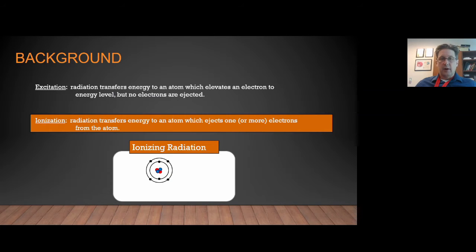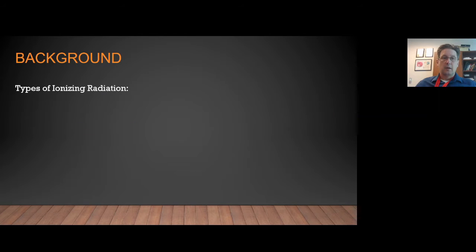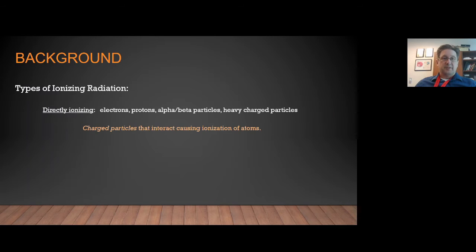To illustrate that, we have our atom. The radiation interacts with that atom and ejects an electron, creating a free electron that moves about the tissue as well as leaving behind a positive ion. The types of ionizing radiation we are concerned with are categorized as directly ionizing — charged particles: electrons, protons, alphas, heavy charged particles — and they cause ionization of atoms as they interact on their way through tissue.